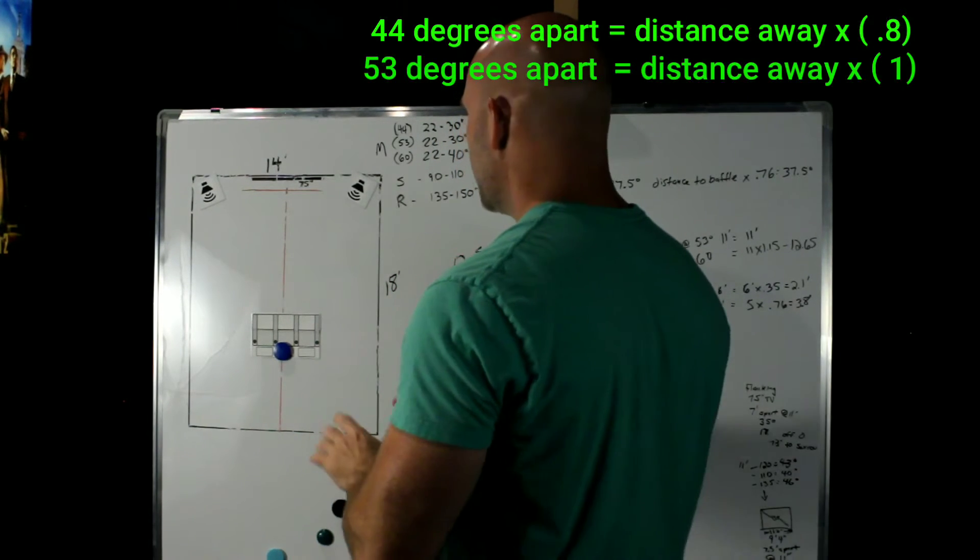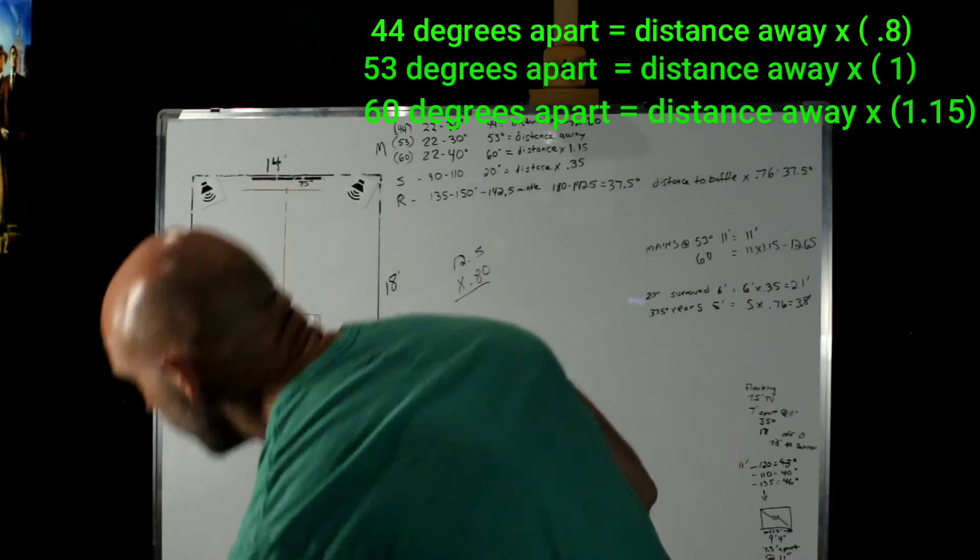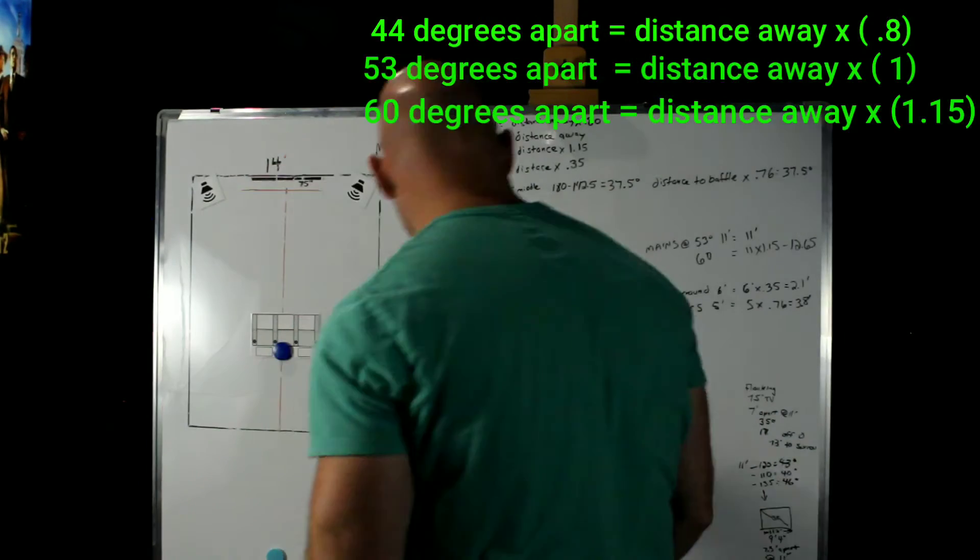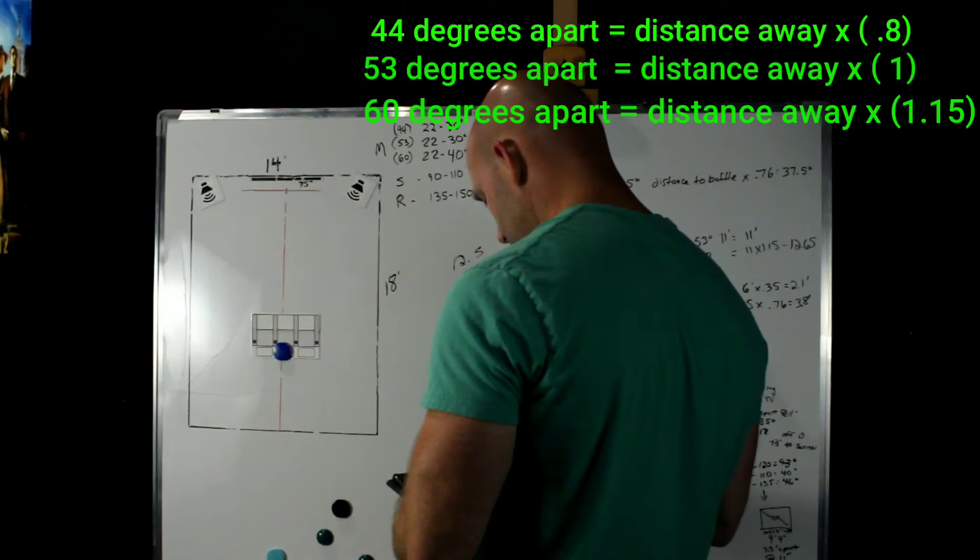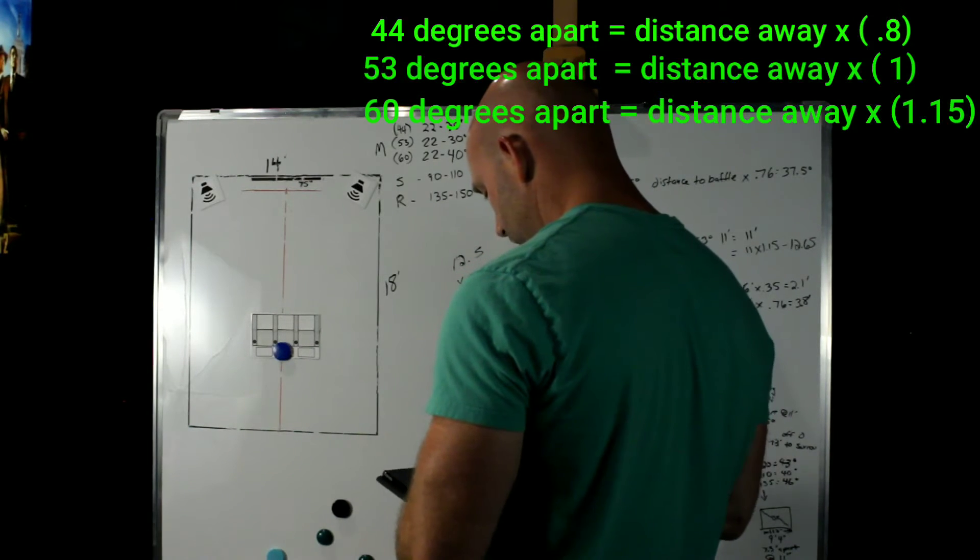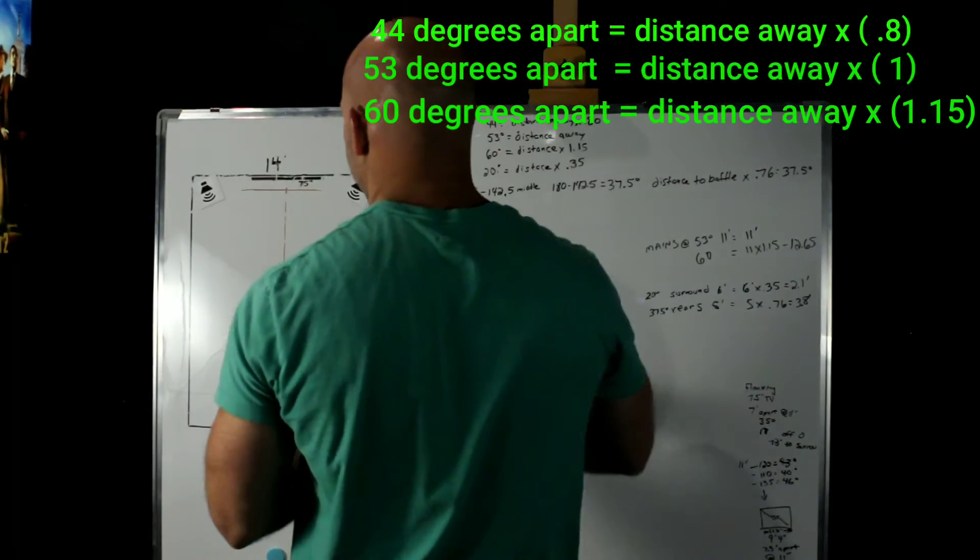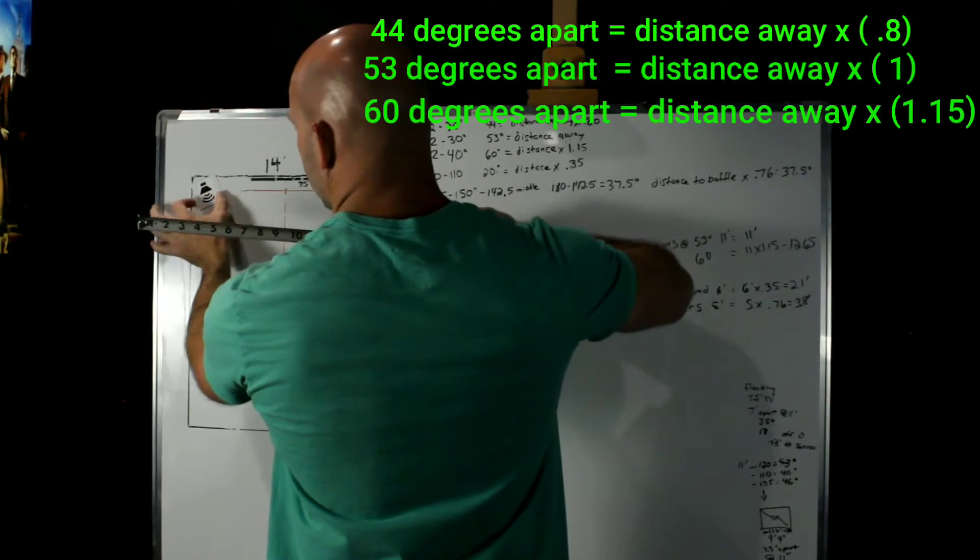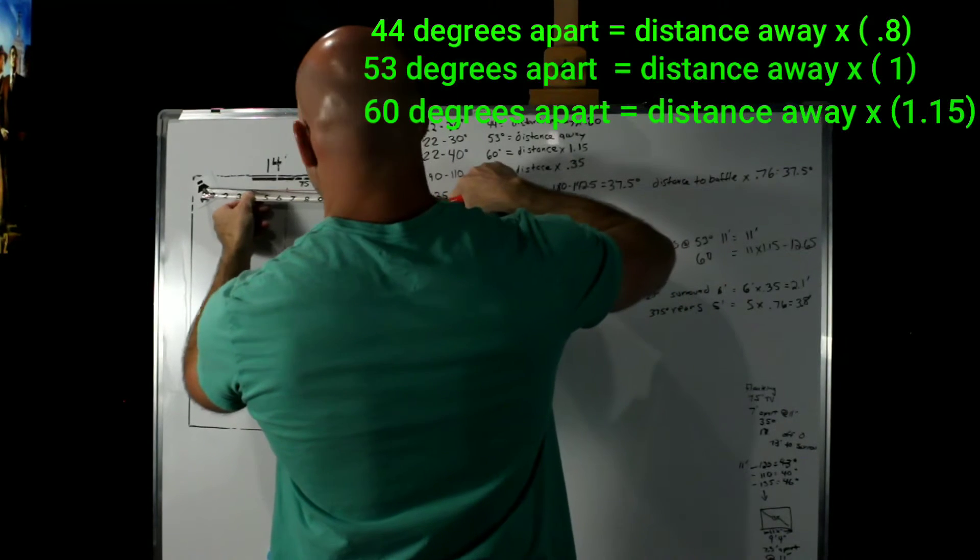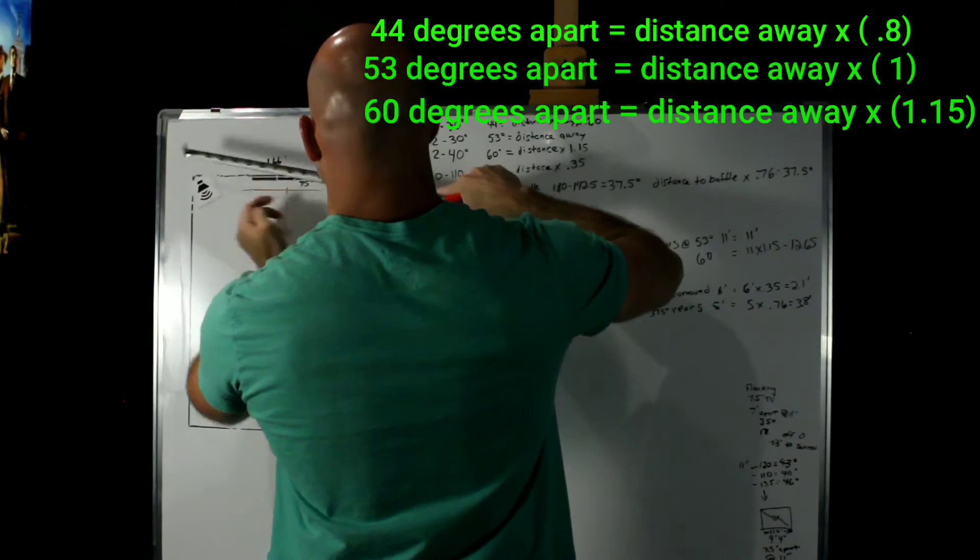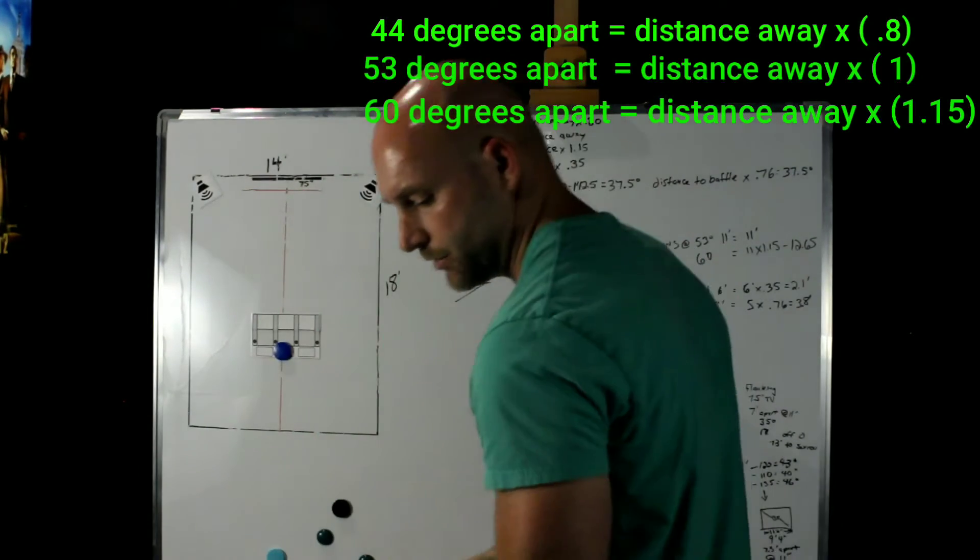Now 60 degrees, if we wanted to find that, we would multiply this 11 feet times 1.15. So 11 times 1.15 is 12.65. Now I'm not sure if we can get 12.65. Let's see. Actually, we can just barely. So that's about 12.65. So that's 60 degrees apart.